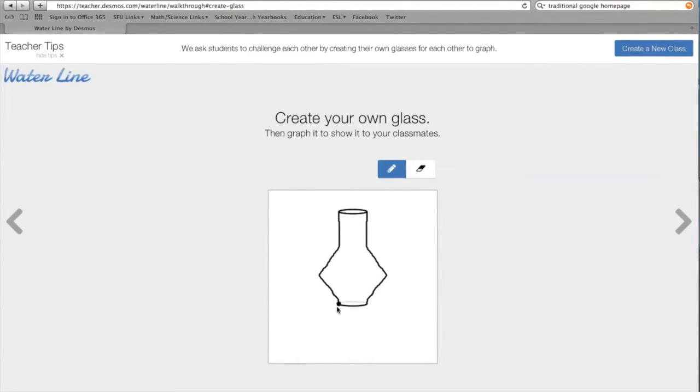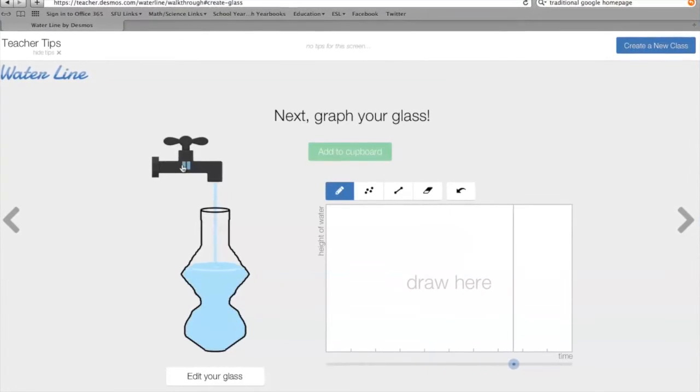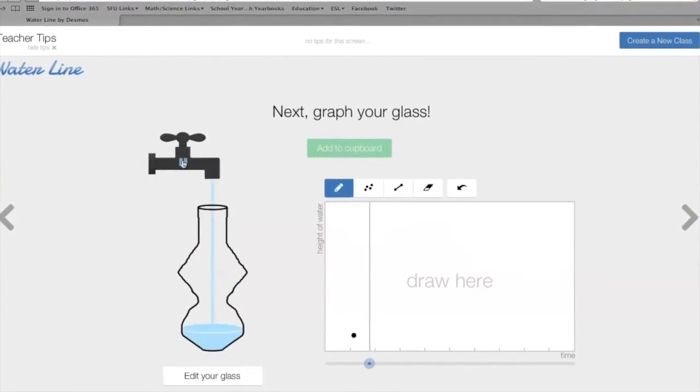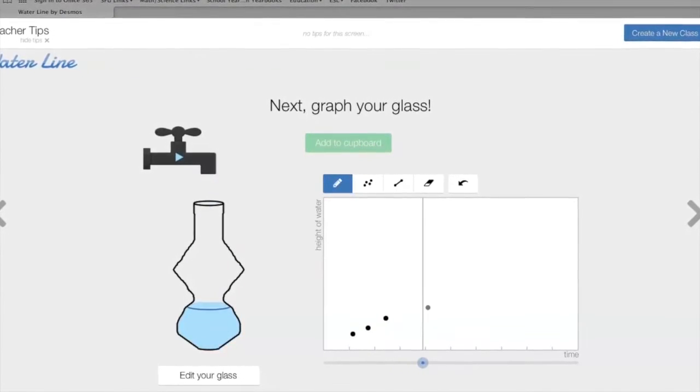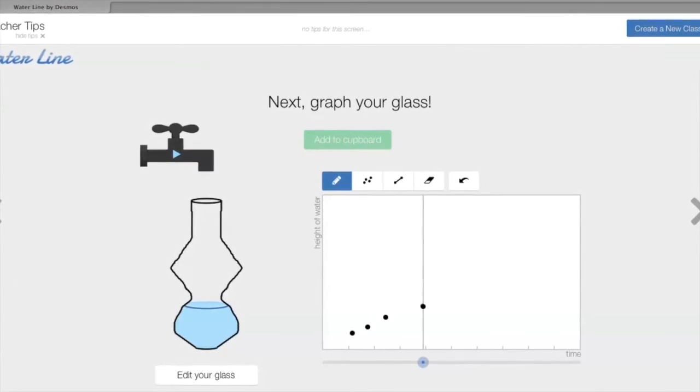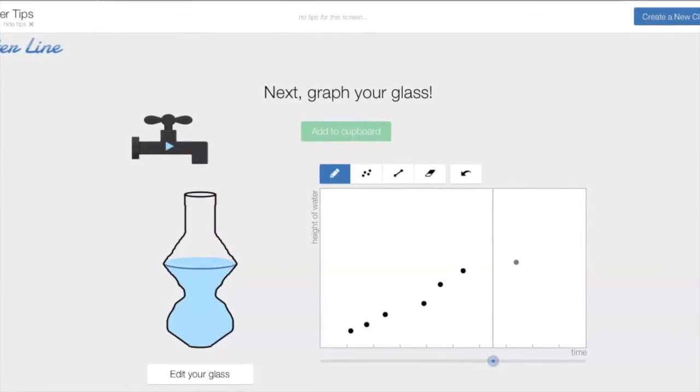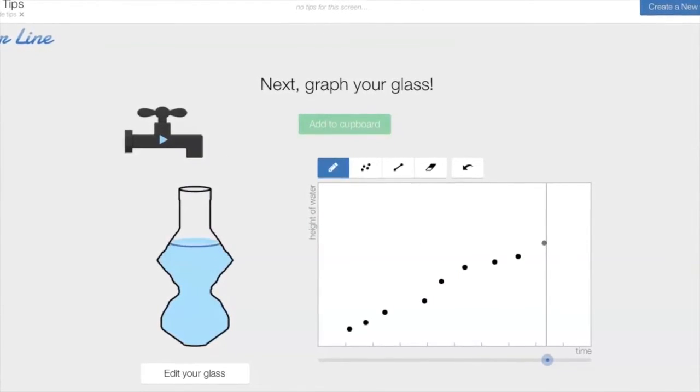I agree that this Desmos activity is a powerful learning tool for students. However, are there any aspects about the task or technology that you would change? Although most students gained a clearer understanding of slope, I felt that some students drew their graphs without really thinking about the process. This is because they could move the scrubber in tiny intervals and plot those points and draw an accurate graph almost immediately.